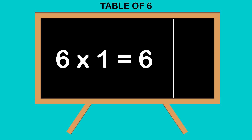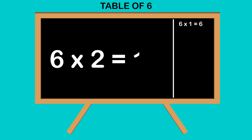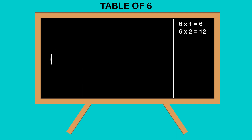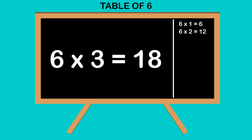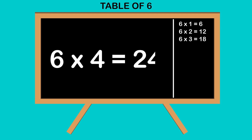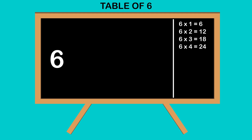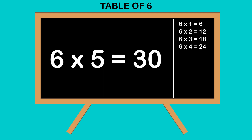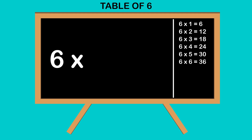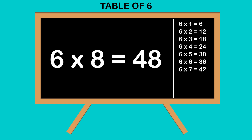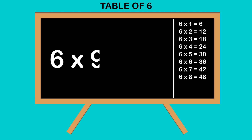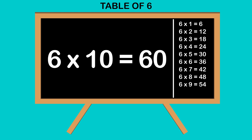Table of 6. 6 1's are 6, 6 2's are 12, 6 3's are 18, 6 4's are 24, 6 5's are 30, 6 6's are 36, 6 7's are 42, 6 8's are 48, 6 9's are 54, 6 10's are 60.